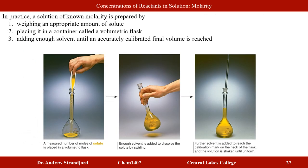In practice, if I need a solution with a very accurately known concentration, I would use a volumetric flask rather than a graduated cylinder. I would first weigh the solute accurately on a balance, place it in the volumetric flask, add a little water and swirl to dissolve completely, then add enough solvent to bring the volume up to the calibration mark, and shake again.